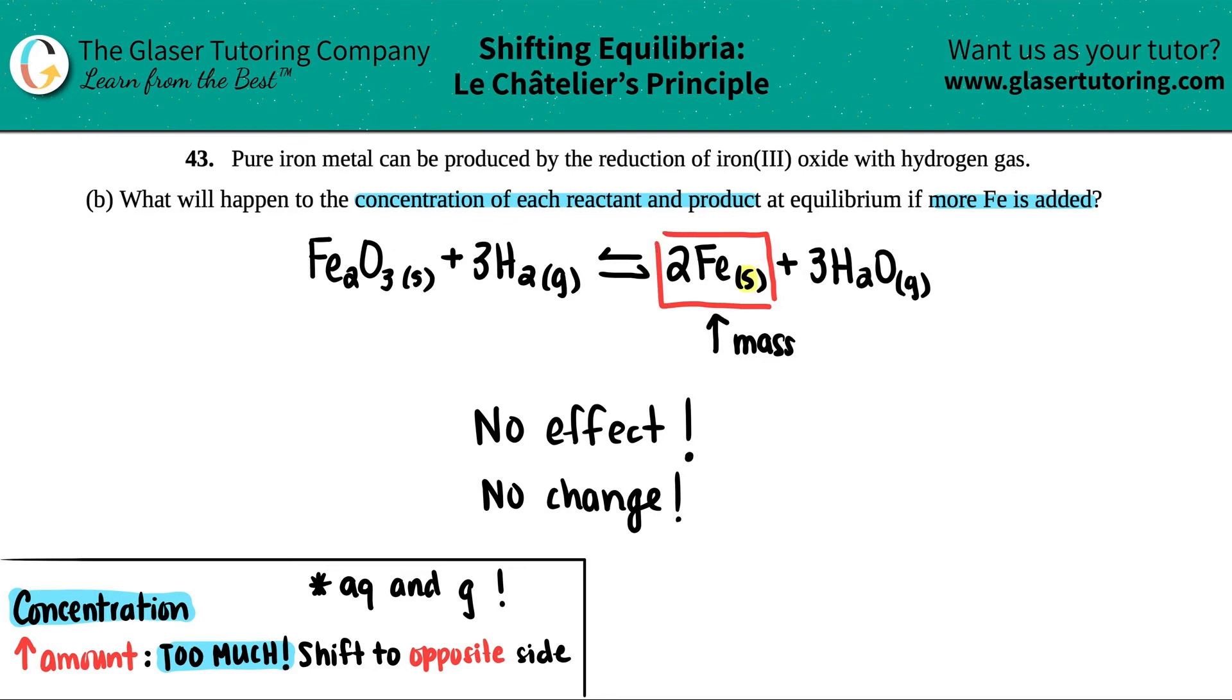Because they ask what will happen to the concentration of each reactant and each product. So for Fe2O3, no change; H2, no change; Fe, no change; H2O, no change or no effect. That's it. Easy peasy.